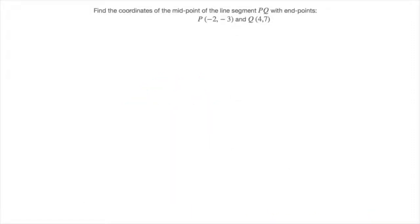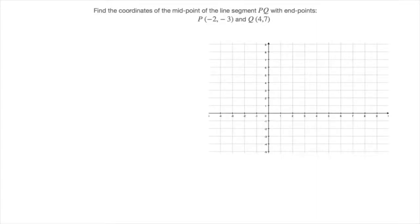Here we're given an exercise. We're asked to find the coordinates of the midpoint of the line segment PQ with endpoints P with coordinates (-2, -3) and Q with coordinates (4, 7). Well, although this isn't asked, I always like to make a quick sketch of the line segment that we're actually talking about. That gives me an idea of where the midpoint should roughly be. So let me start with a quick XY grid.